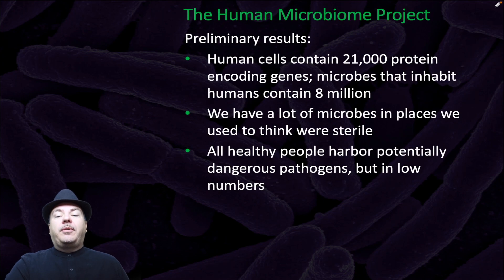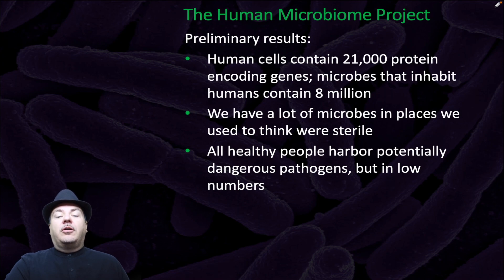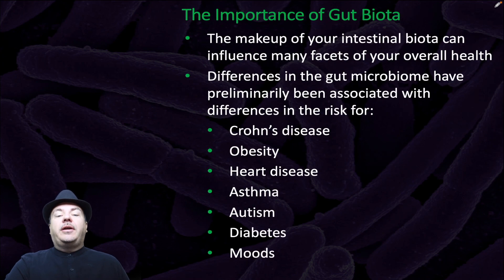The goal of the human microbiome project was to study the human microbiome. The preliminary results show that human cells contain 21,000 protein-encoding genes, whereas microbes that inhabit humans contain 8 million. We have a lot of microbes in places we used to think were sterile, and all healthy people harbor potentially dangerous pathogens, but low in numbers.